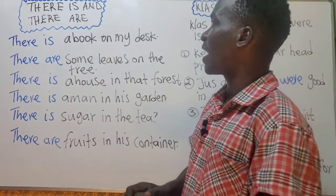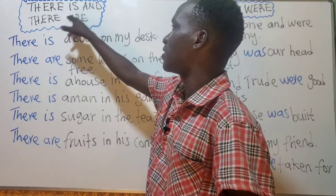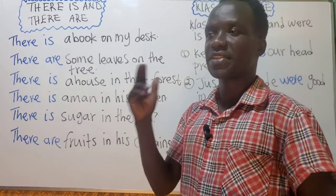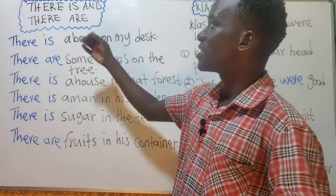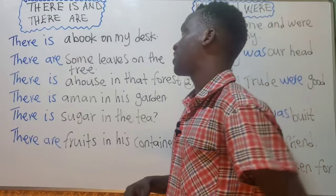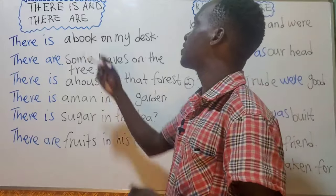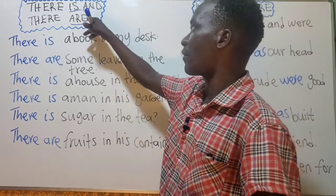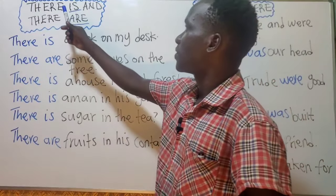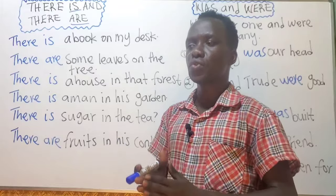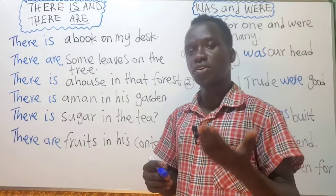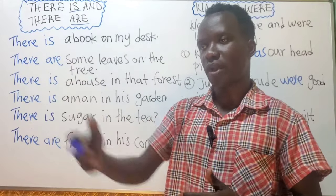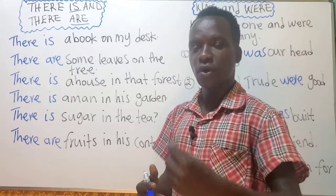Today we shall look at 'there is' and 'there are' — how to use them. They are used with singular or plural depending on whether you use 'is' or 'are.' As you know, 'is' is used in singular and 'are' is used in plural. 'There' is an article used to talk about an object that is not with you, something that is quite far away from you.